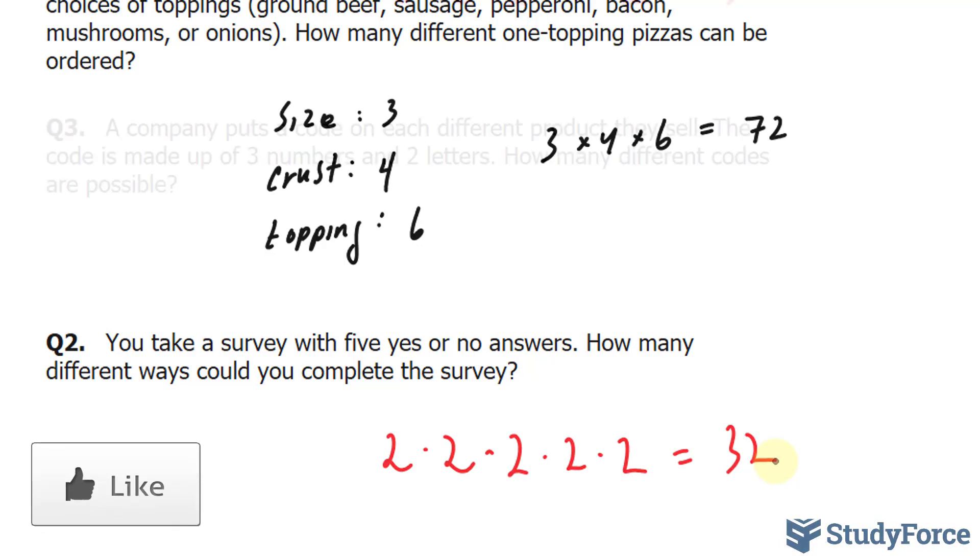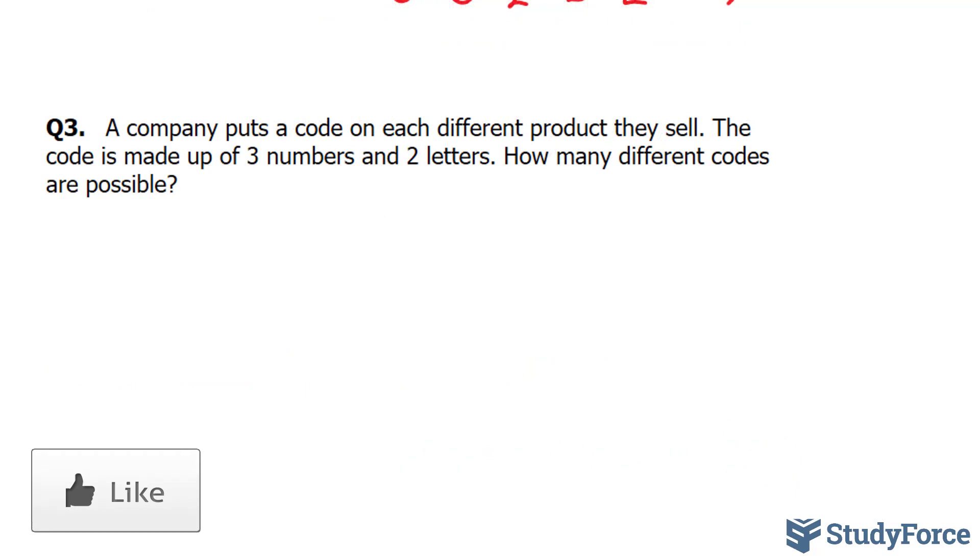The last question reads: a company puts a code on each different product they sell. The code is made up of three numbers and two letters. How many different codes are possible?